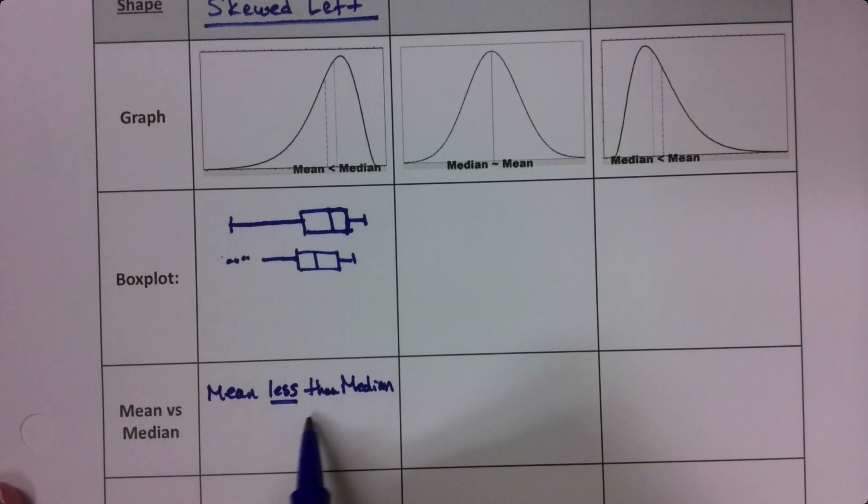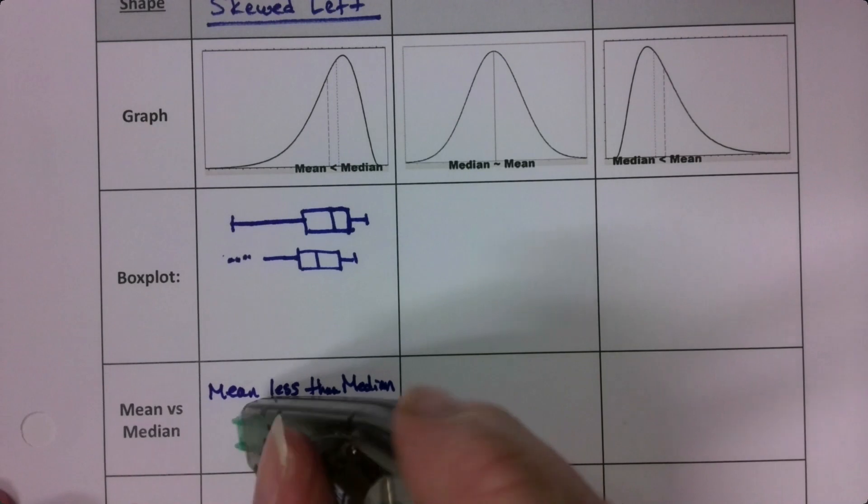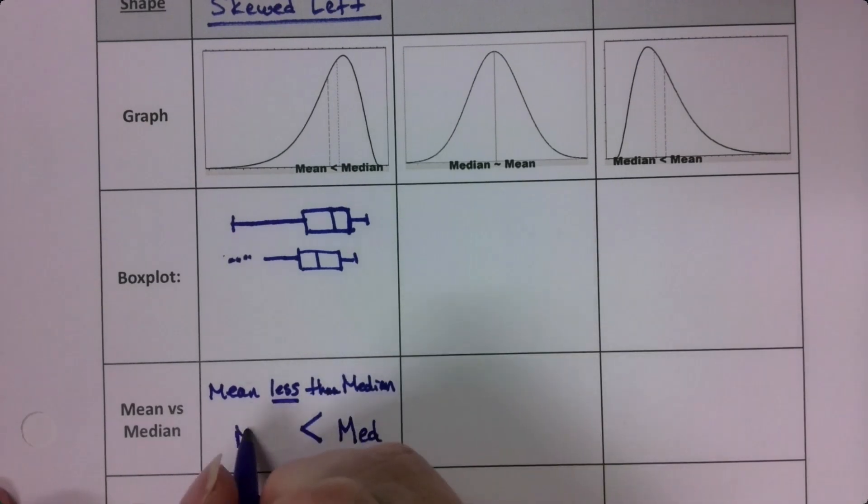The symbol for that is that. So you'd say the mean, which the symbol for the mean is mu, is less than the median. But if you don't like that here, we can just write mean. It's fine.